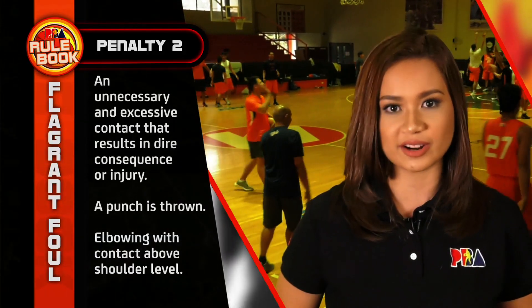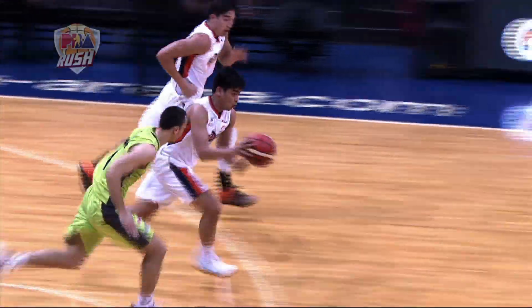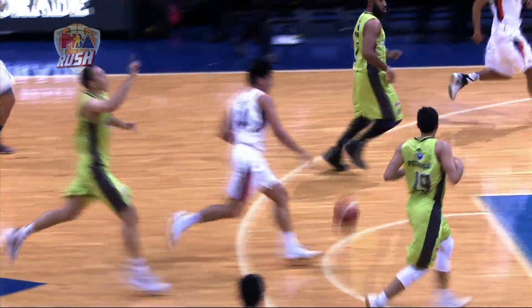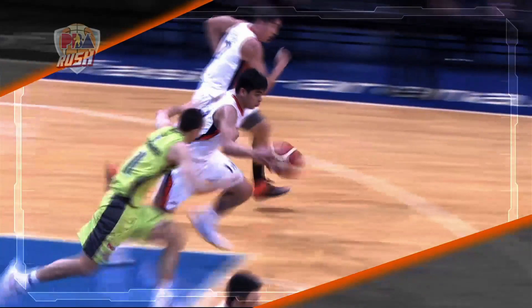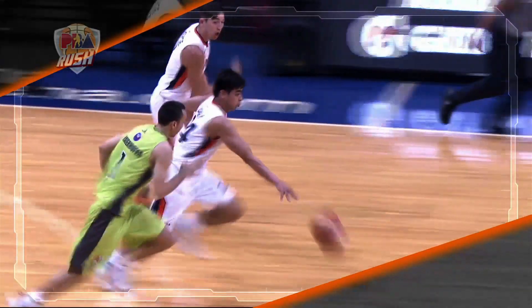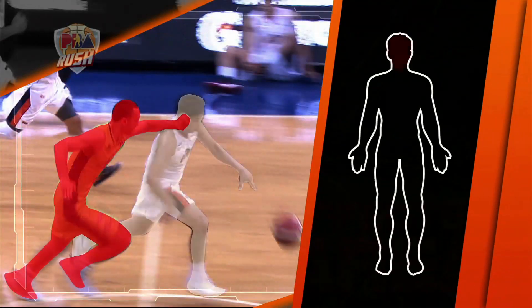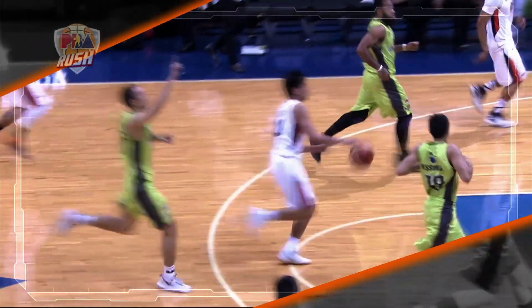Let's take a look at how the flagrant foul penalty two looks like. He hit him on the head and you can see two referees made that signal right away — it was a play on the head. Let's take another look. As seen here, Rico Meyerhofer clearly throws a punch and lands around the head area of Jonathan Green, resulting in a flagrant foul penalty two call.